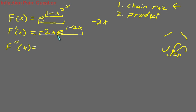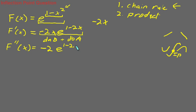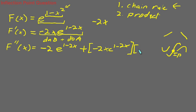Now, to take the second derivative, we have to use the product rule because we now have two different functions. The product rule is: derivative of A times B, plus derivative of B times A. We call the negative 2x our A — its derivative is negative 2 — multiplied by our B unchanged. Then we add the derivative of e to the 1 minus x squared, which we found already: negative 2x times e to the 1 minus x squared, multiplied by our un-derived A, which is negative 2x.